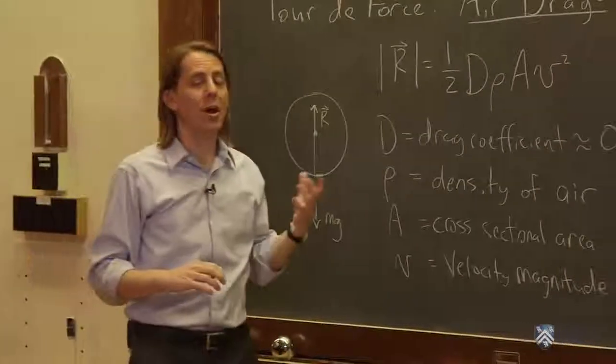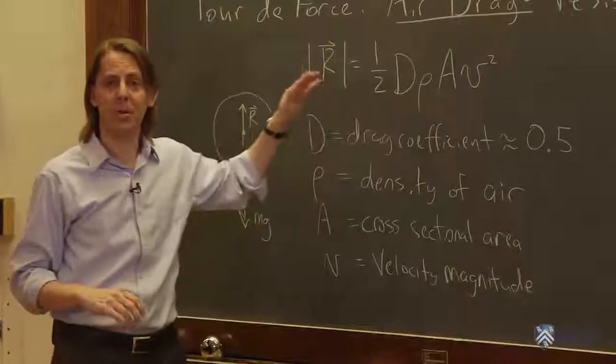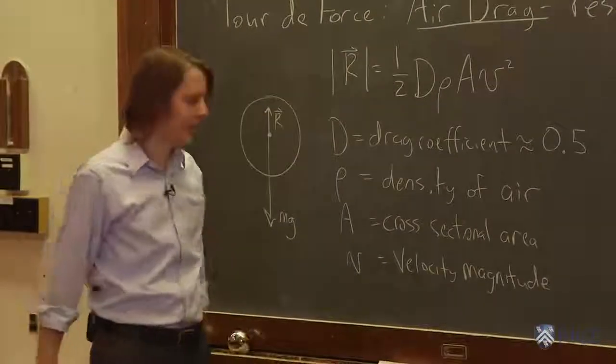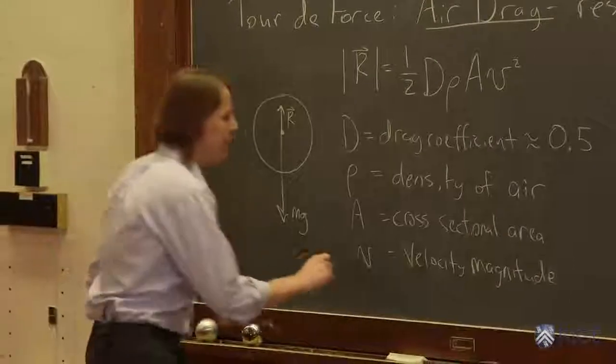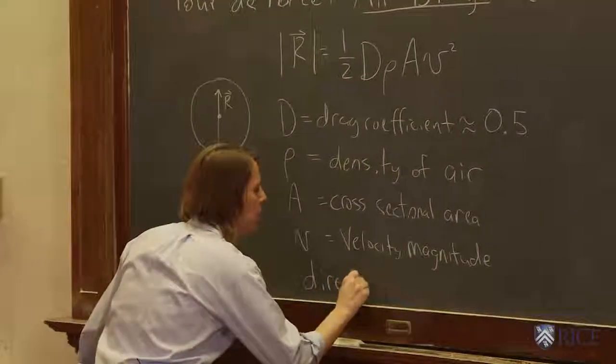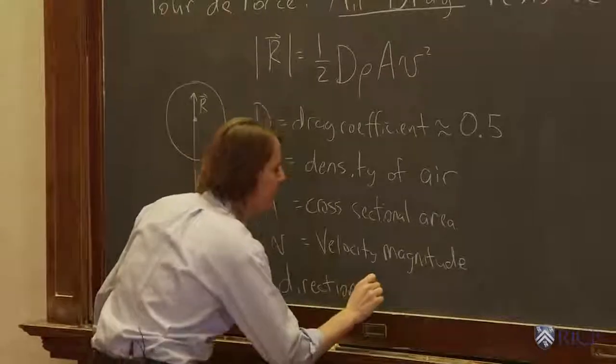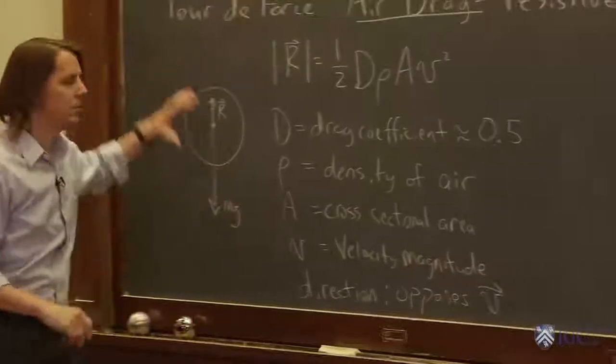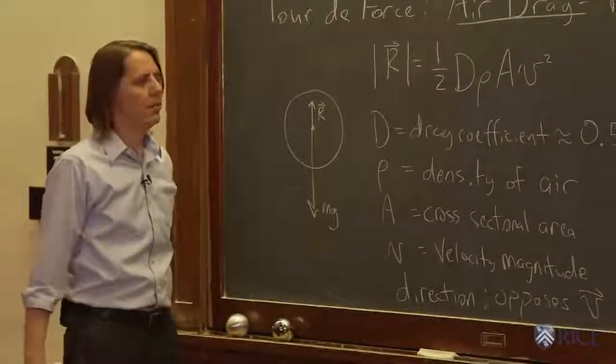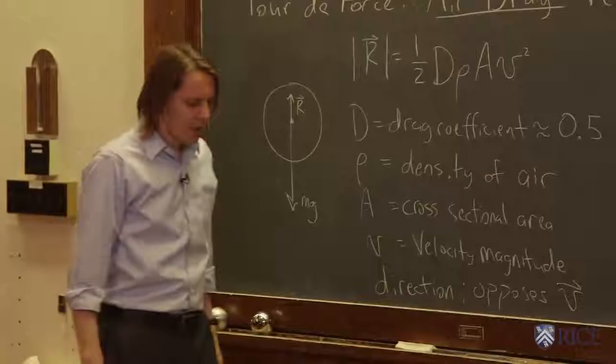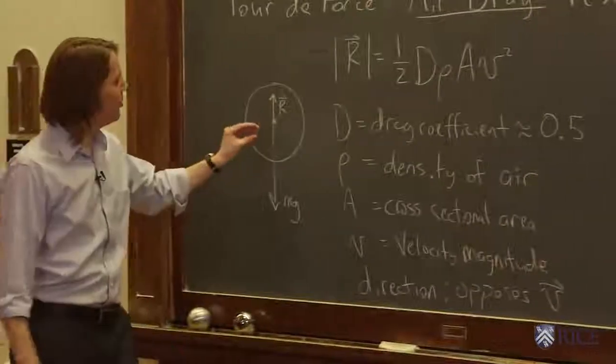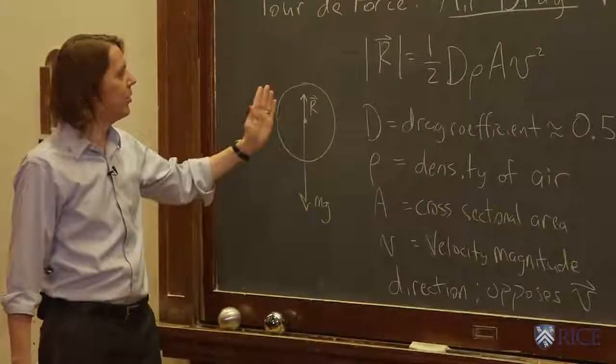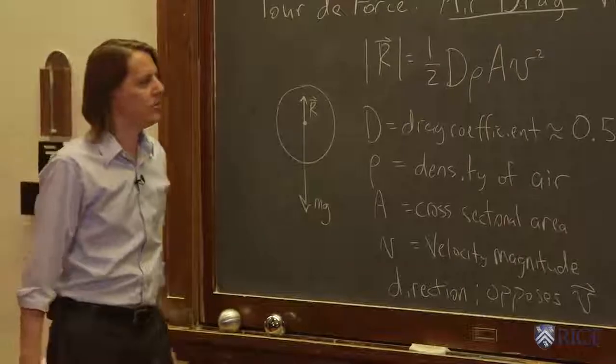We're not going to derive where this formula comes from—it's fluid mechanics, very complicated. But we know that this is a pretty accurate representation of the magnitude of the force. And that's the magnitude. The direction is that it opposes v, opposes the motion down since it's falling. So that's why I drew the force up. This is going to oppose the motion, and if the object is light, it can actually become significant. The air drag can become as large as the weight.